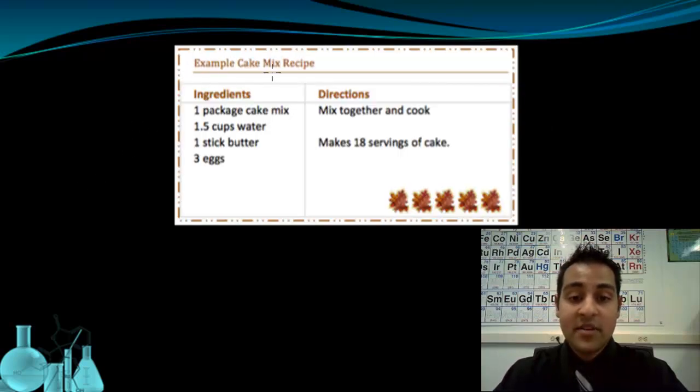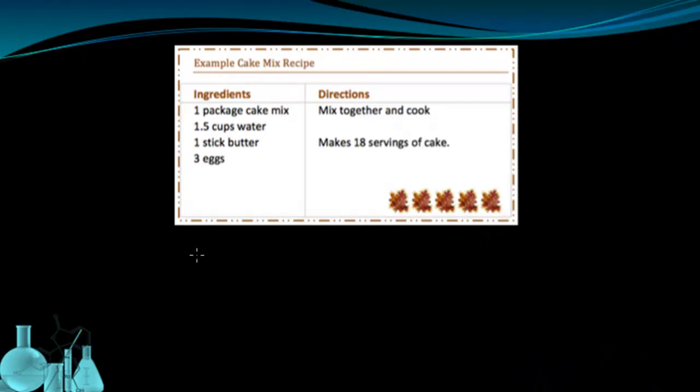Here we have an example recipe for some cake mix. It says you have one package of cake mix and one and a half cups of water and one stick of butter and three eggs. Mixed together and cooked will give you 18 servings of cake. We could actually write this as an equation. The one packet of cake mix plus the 1.5 cups of water plus the one stick of butter plus the three eggs yields 18 cake.